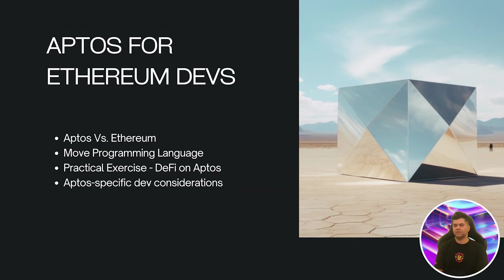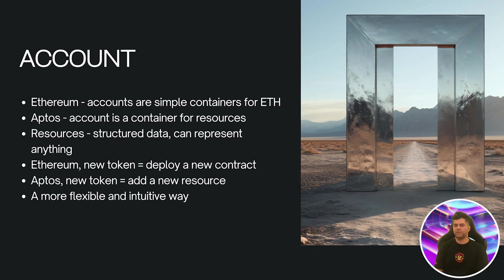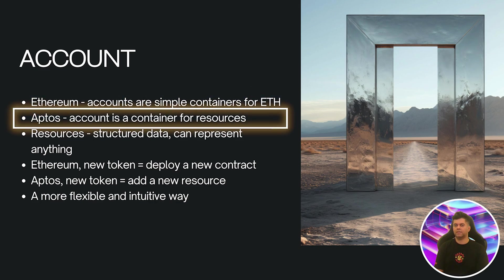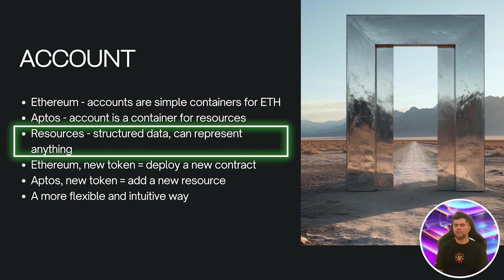Let's get into the key differences between Aptos and Ethereum. First up, let's talk about the account model. In Ethereum, accounts are simple containers for ETH with a nonce to prevent replay attacks. Aptos takes a different approach with what we call a resource-oriented model — an account is more like a container for resources, which are structured data that can represent anything from tokens to complex game assets.